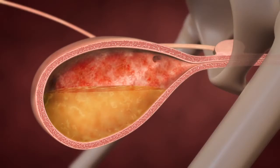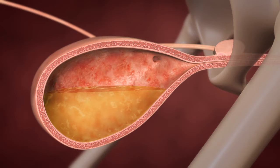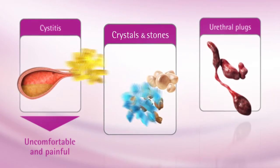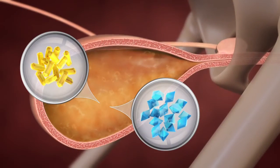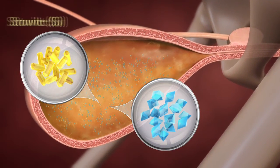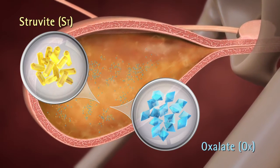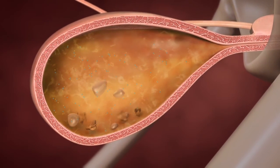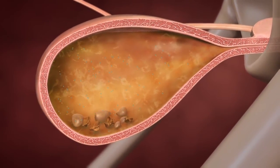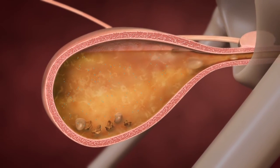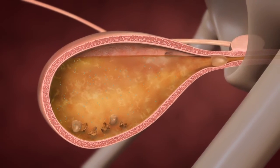Cystitis is an inflammatory condition of the bladder which can be uncomfortable and painful. Certain components in the cat's urine, such as minerals, can lead to the formation of crystals, the most common being struvite and oxalate. Later the crystals can develop into stones. Both can cause irritation, and the stones can even block the flow of urine.